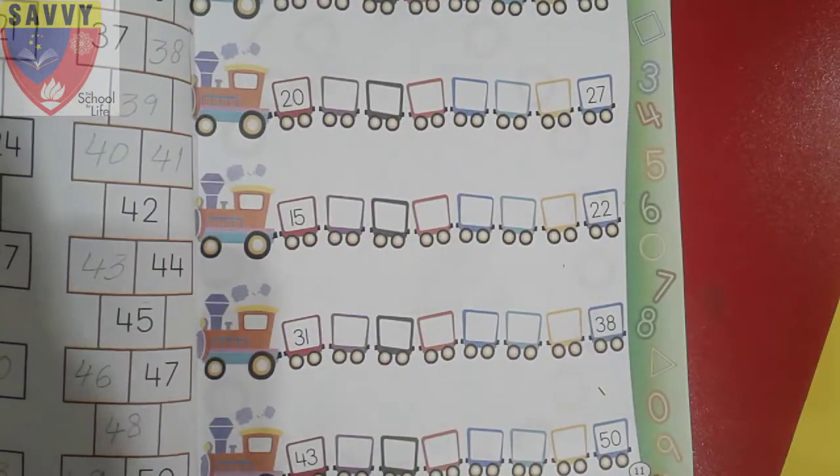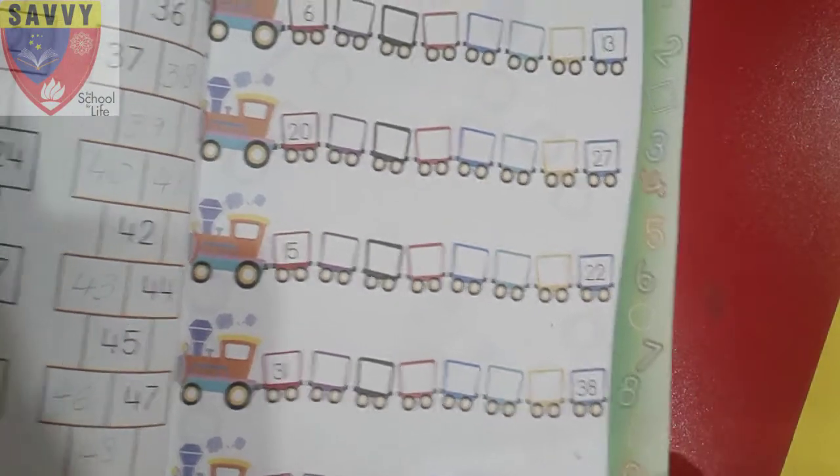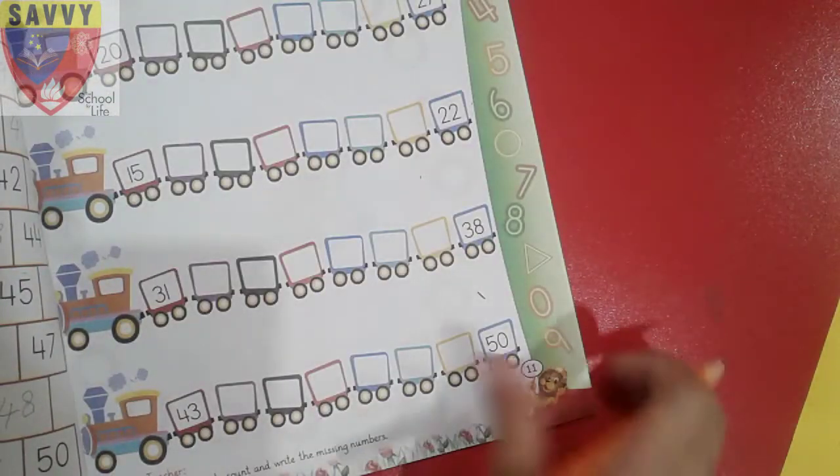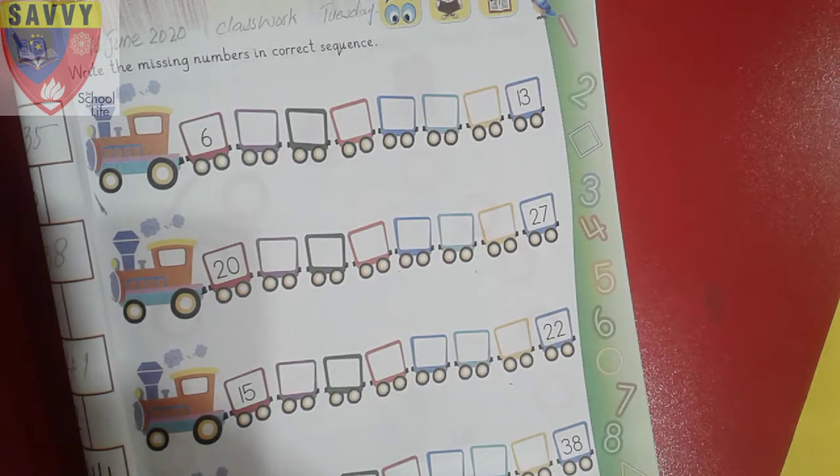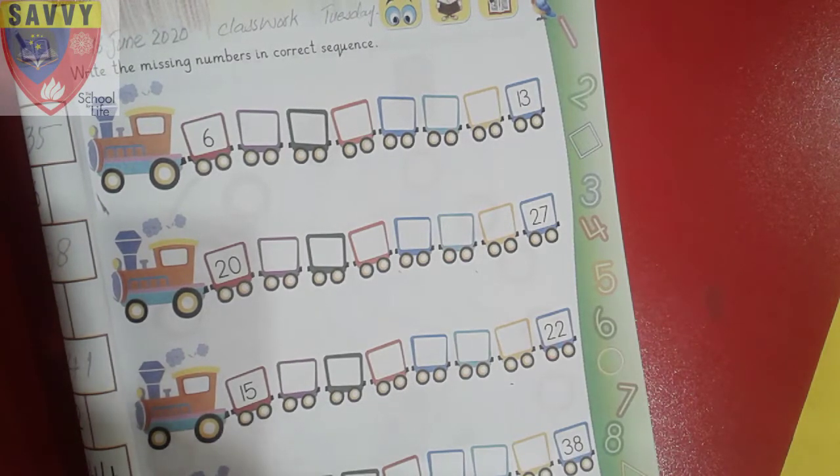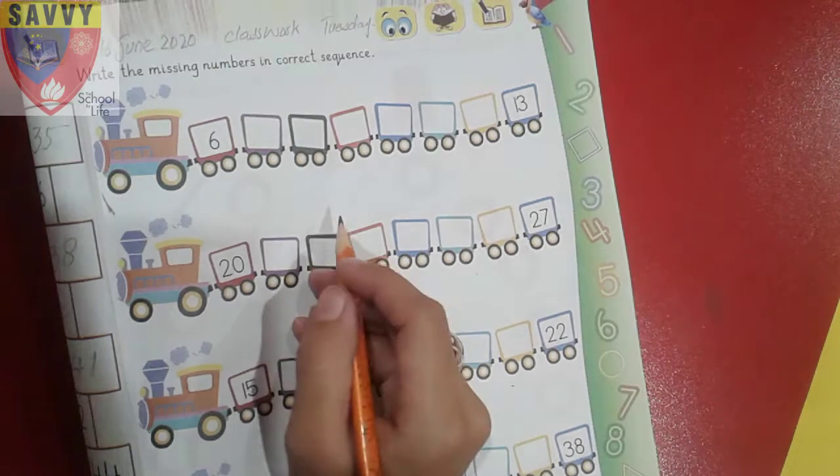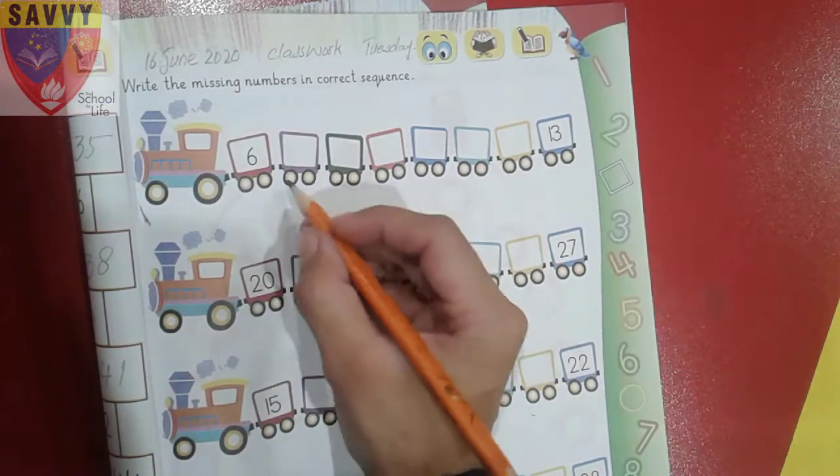So this was page number 10 which we have completed. Now we have the same on page number 11. Write date and day, and write the missing numbers in correct sequence.